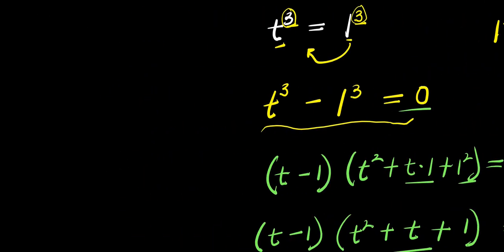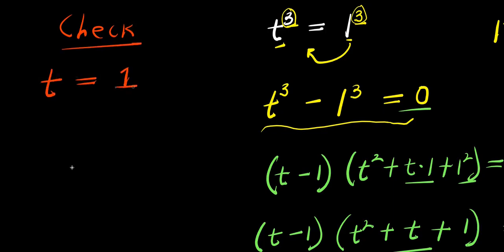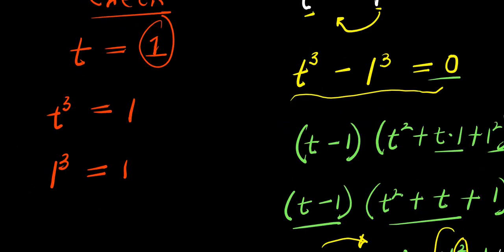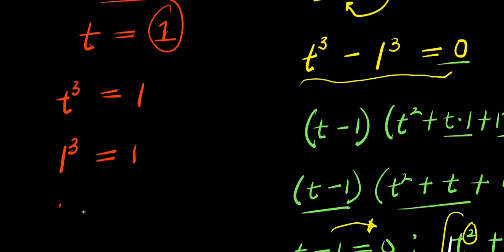Now if you want to check, it's very simple. You substitute this value for t, which is 1, back into the problem: t to the power of 3 equals 1. So you insert this value for t — you have 1 to the power of 3, which is the same thing as 1, and 1 raised to the power of 3 is 1, which equals 1. Remember, 1 raised to the power of any number is 1. So this shows that the answer is correct.